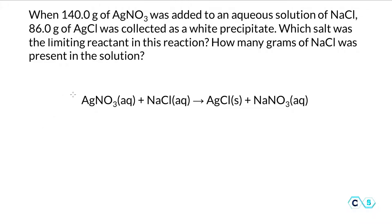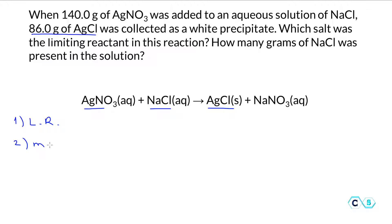When 140 grams of silver nitrate was reacted with a solution of sodium chloride, there were 86 grams of silver chloride produced in this reaction. So there are two questions that we need to address here: first, what is the limiting reactant in this reaction — is it the silver nitrate or is it the sodium chloride? And second, what is the mass of the sodium chloride that was initially present in the solution?